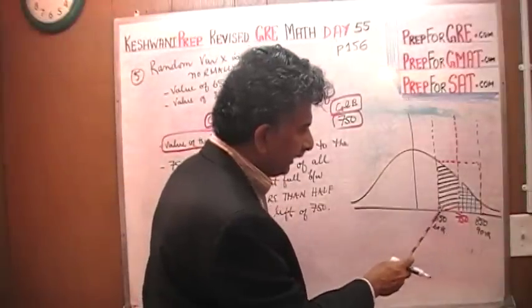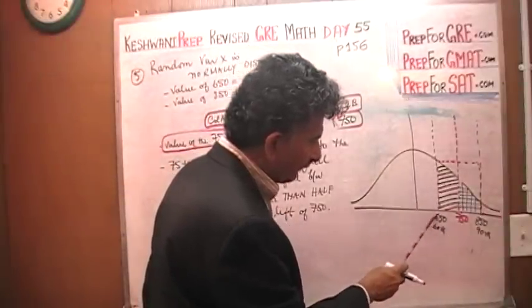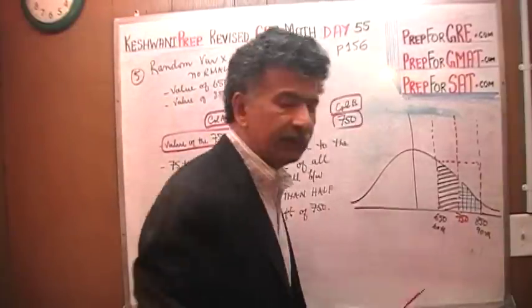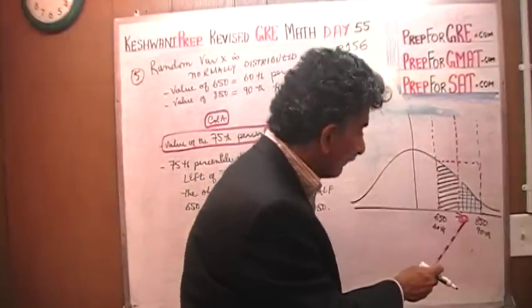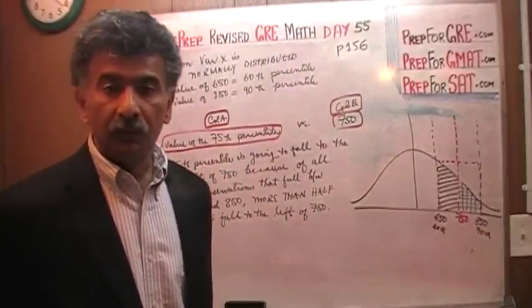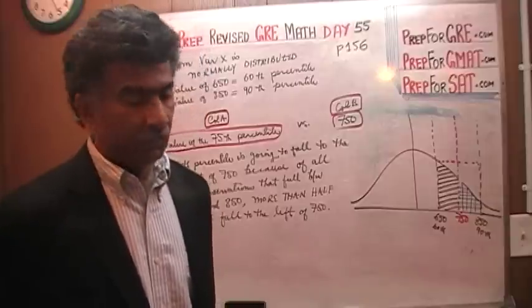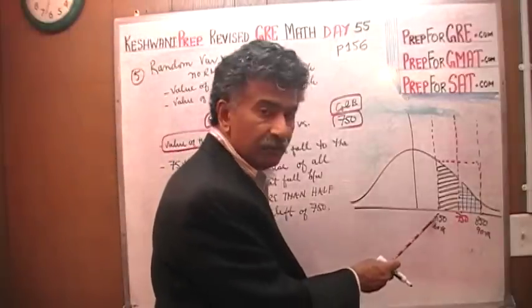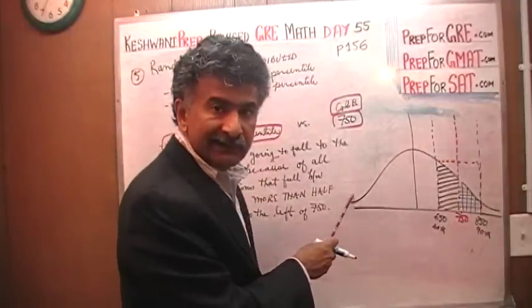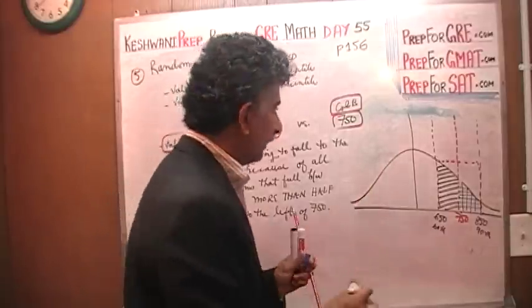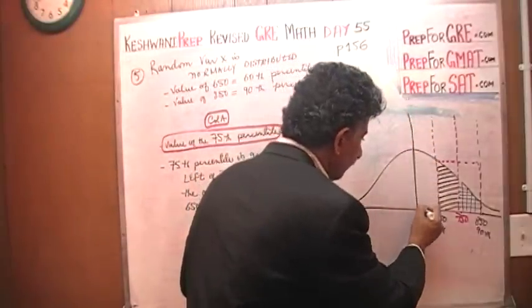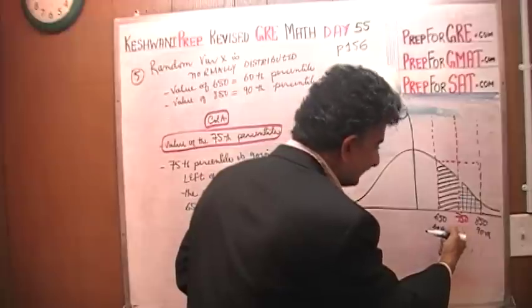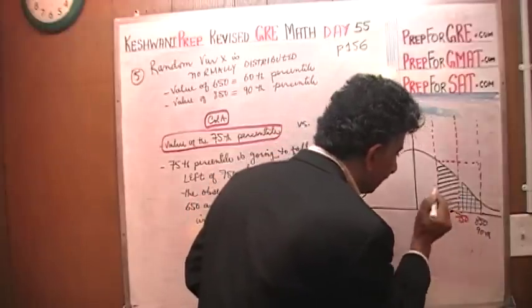This area is much smaller than the area that falls under the curve between 650 and 750. What that means is that more observations will fall between 650 and 750 than the number of observations that will fall between 750 and 850. Therefore, our 75th percentile will not be smack in the middle. By the time you hit 650, we have already seen 60 percent of the observations. This is another 10 percent from here to here, the 60th percentile. But this is not the 75th percentile. The 75th percentile is going to fall somewhere to the left of 750.